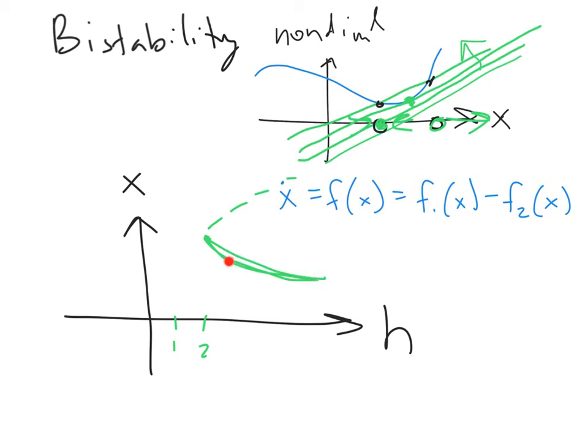But anyway, the local picture is that we have what we call a saddle node bifurcation, and we have the birth of a stable and an unstable fixed point. And actually, I'm going to add some flow lines to this picture.